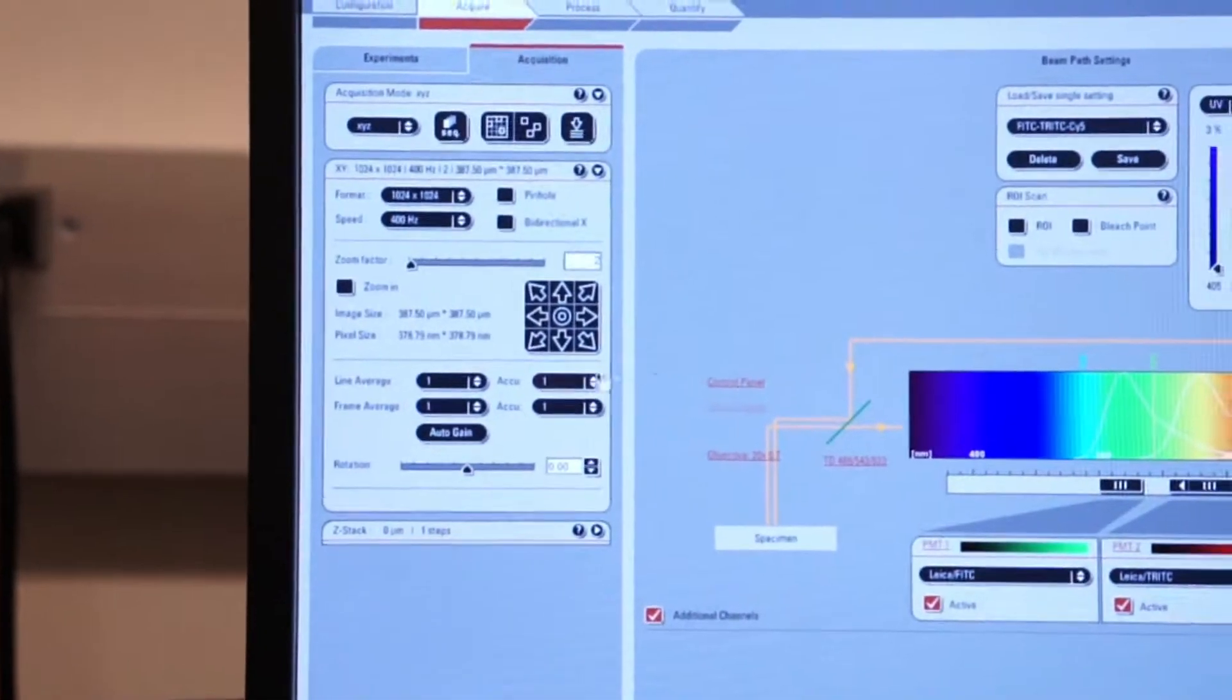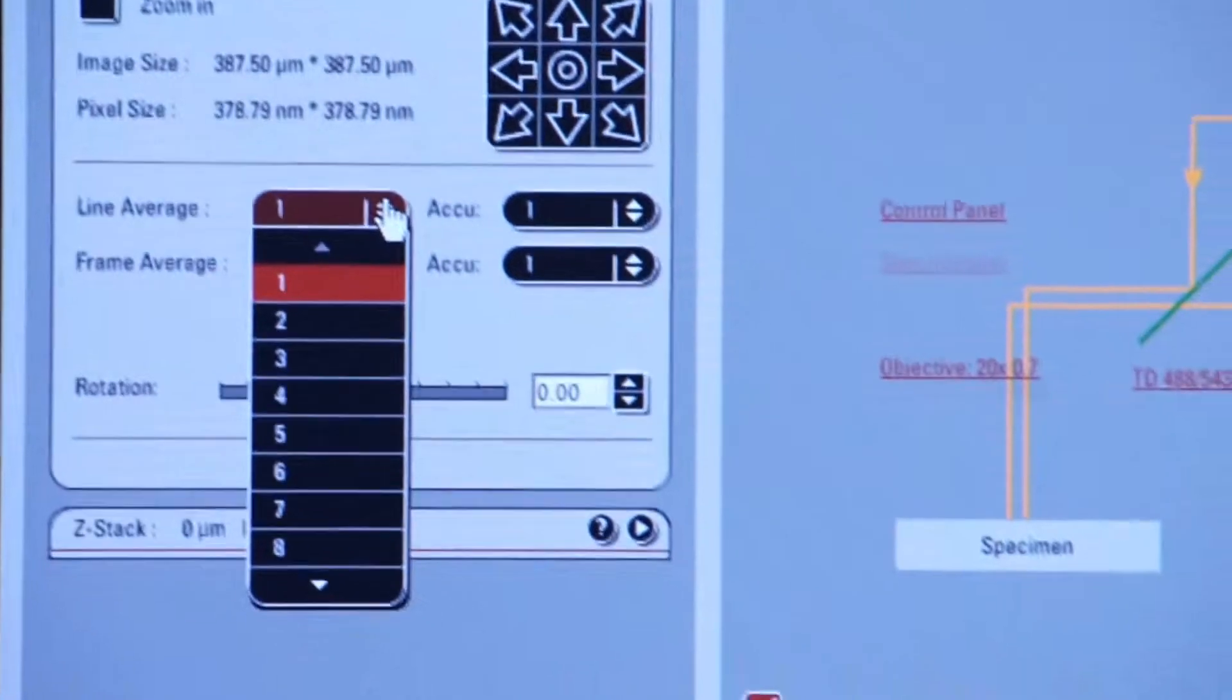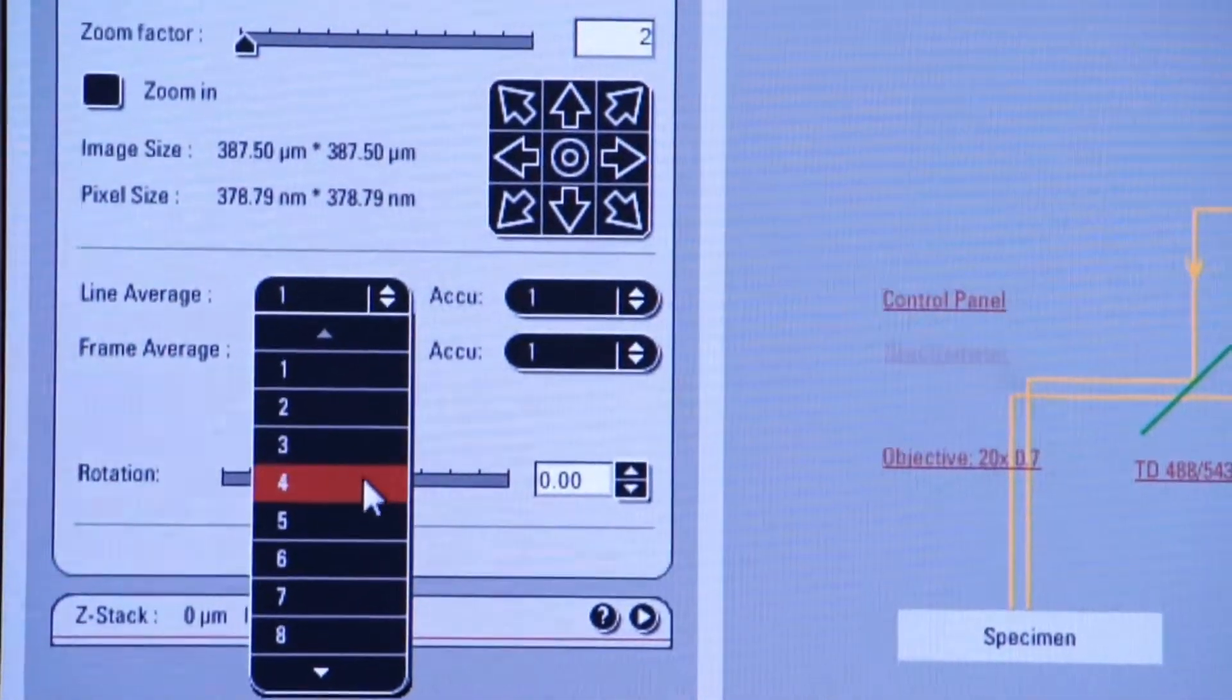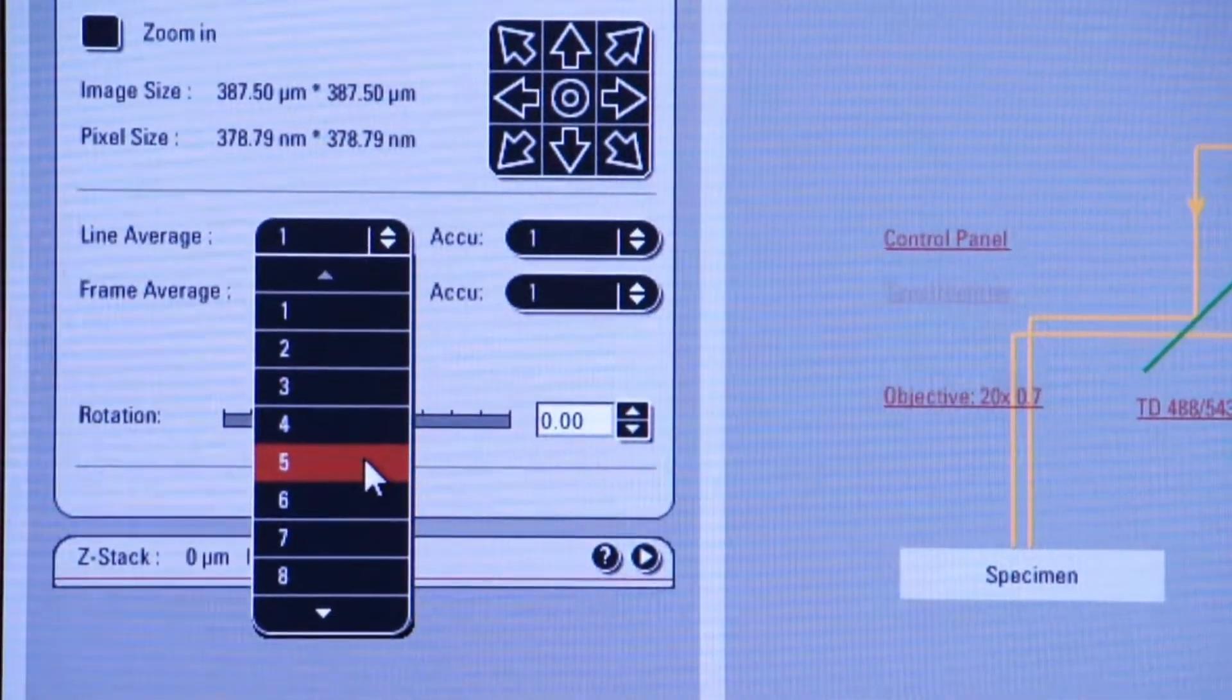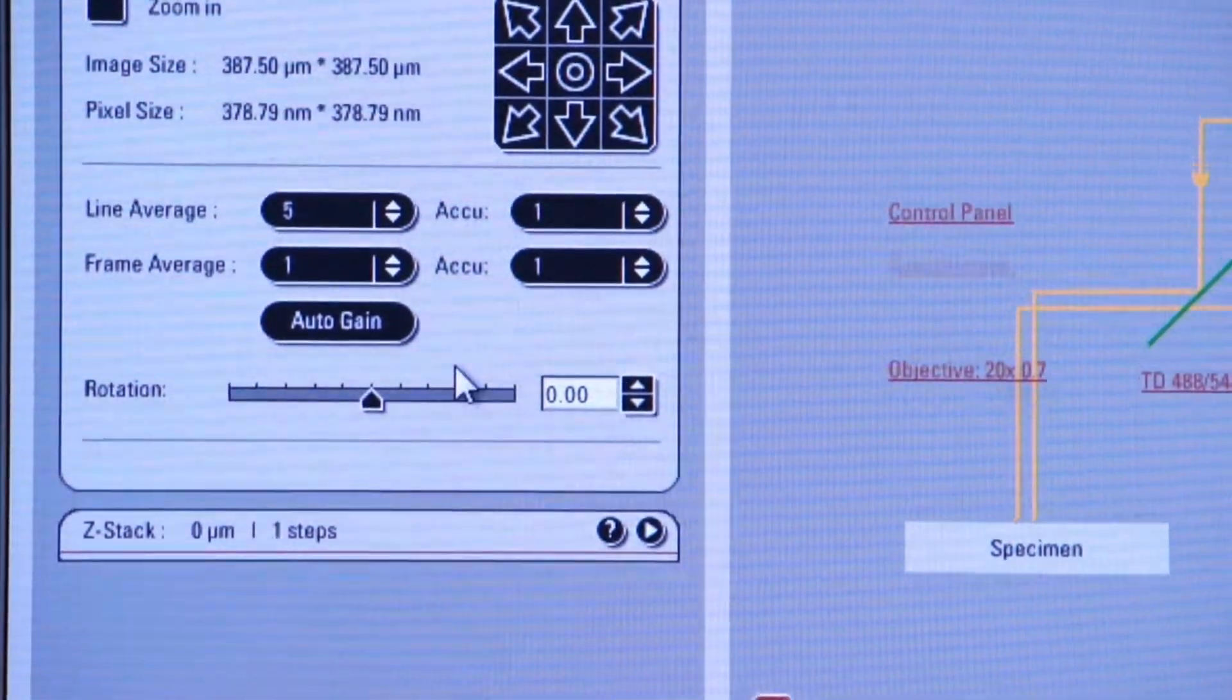If we go back over to the other screen, now we can implement line average and here we're going to average out the information from five different line scans.